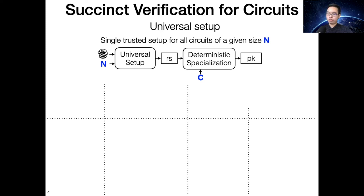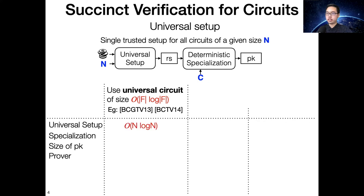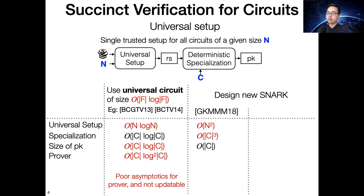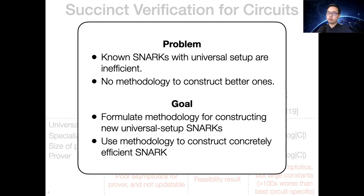There are a few ways we know how to do the universal setup. First, we can use the universal circuit with the circuit-specific setup, but the best solutions we know for this method are at least quasi-linear in the circuit size — in particular, they have a quasi-linear overhead for the prover. To overcome this, people started designing new SNARKs specialized for the universal setup setting. The first work in this line is GKMMM in 2018, but it's mostly a feasibility result because the setup and preprocessing are quadratic. Next, we have SONIC, which is the first SNARK achieving optimal asymptotics in the universal setup setting, but it has a large constant — about 100 times worse than the best circuit-specific SNARKs. In summary, there are SNARKs with universal setup, but they are all inefficient and there is no clean methodology to construct better ones.